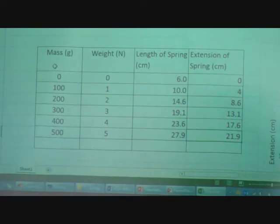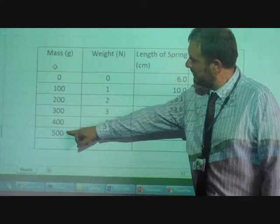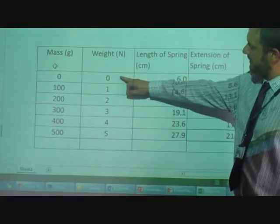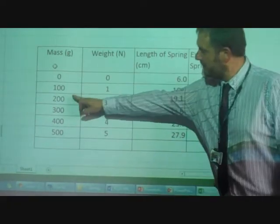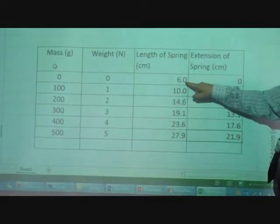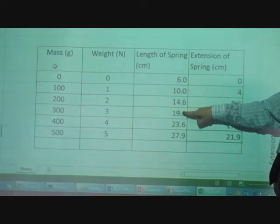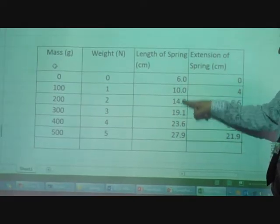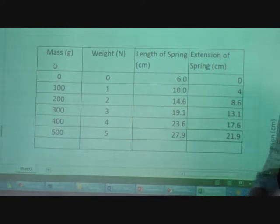Here we've got the data from the practical you've just seen. Remember we had mass, 100 grams, we did up to 500 grams, and this was a conversion into weight. We said 100 grams is 1 newton, 200 grams is 2 newtons. The original length of the spring was 6 centimeters, and then we recorded the new extended length for each of the masses added, or the weight added.